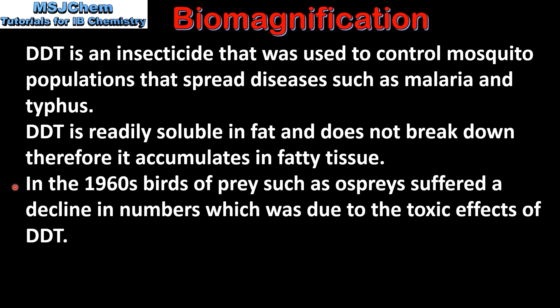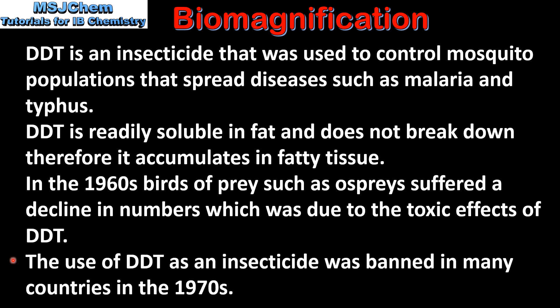In the 1960s, birds of prey such as ospreys suffered a decline in numbers which was due to the toxic effects of DDT. The toxic effects of DDT were caused by biomagnification in the food chain. The use of DDT as an insecticide was banned in many countries in the 1970s.